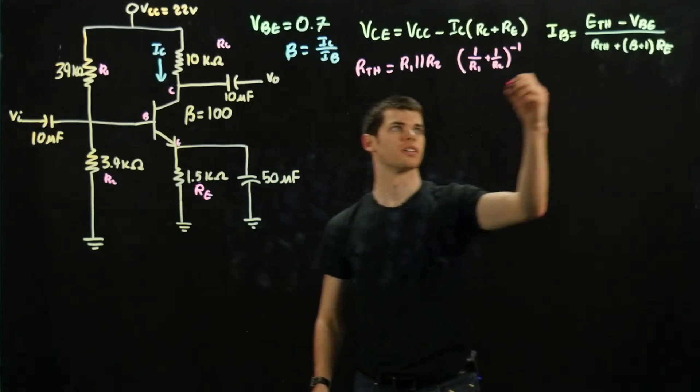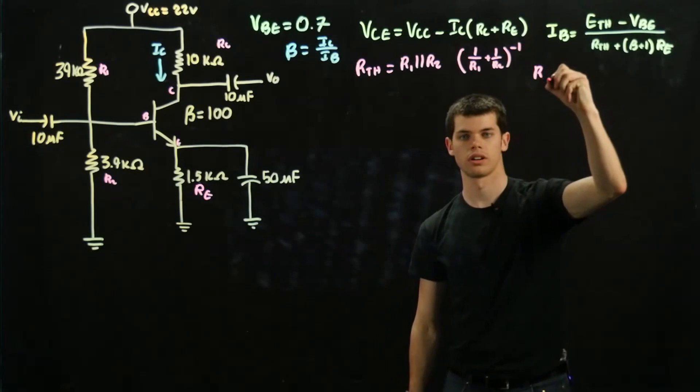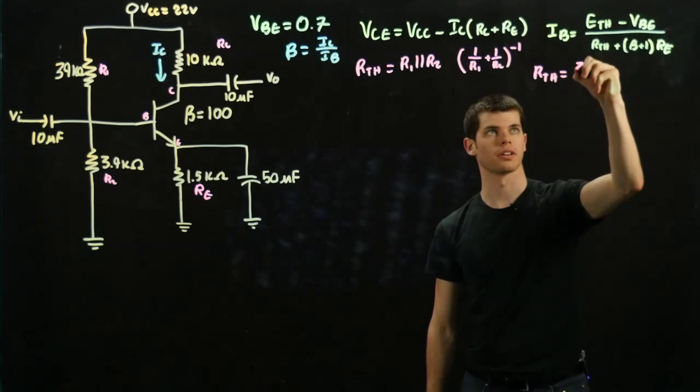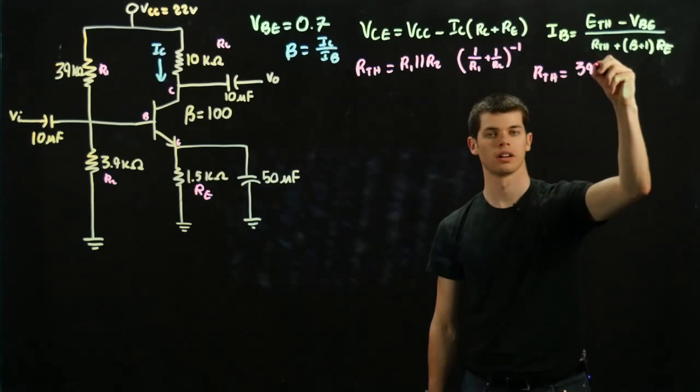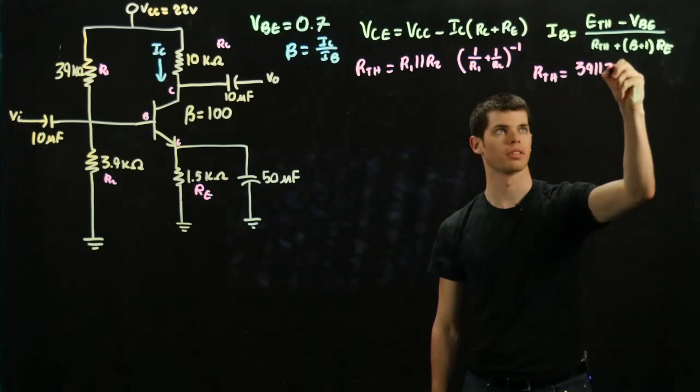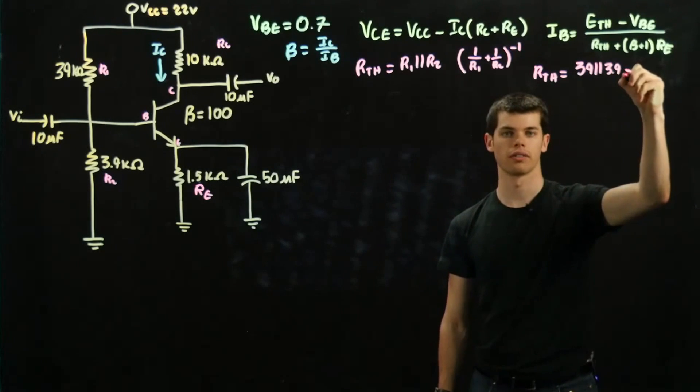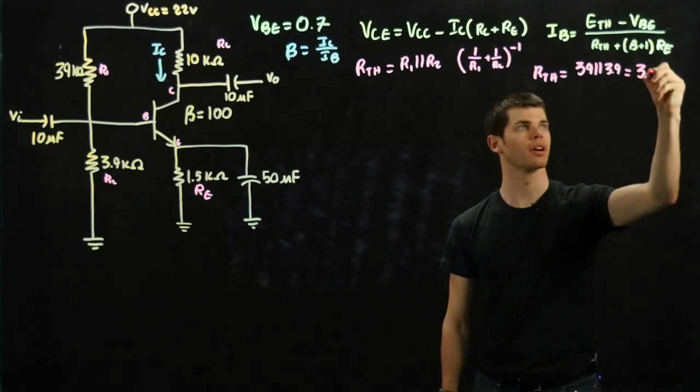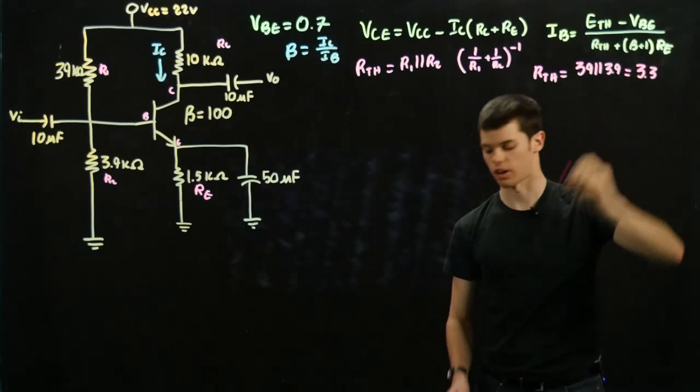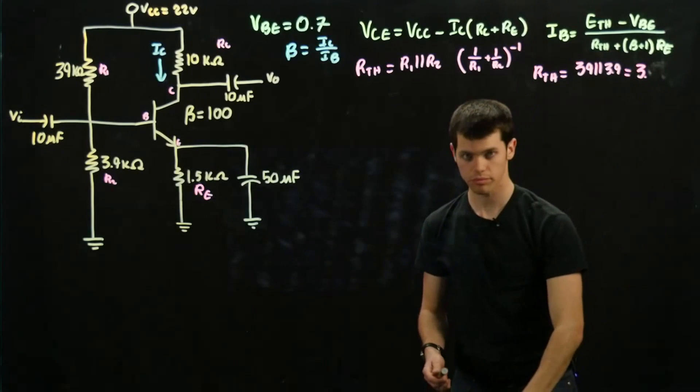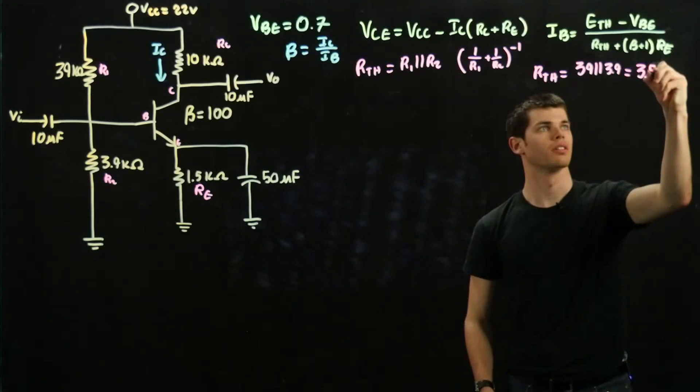Alright, I'll keep using that. So now if we go over here, R-thevenin is going to be equal to 39 in parallel with 3.9, and these are both in kilo-ohms. So when I carry it over, I'm going to get 3.35... sorry, 3.55 kilo-ohms.